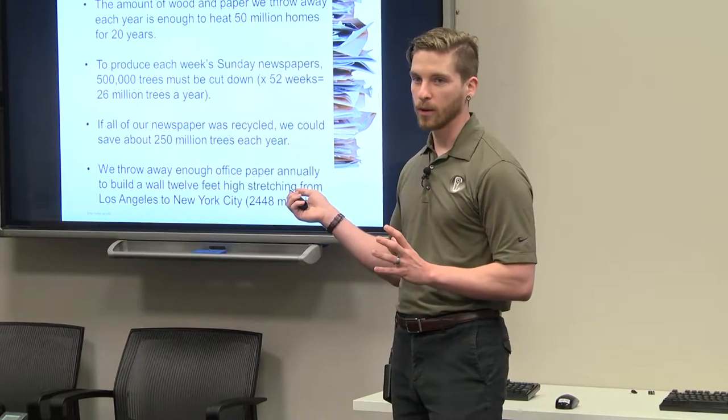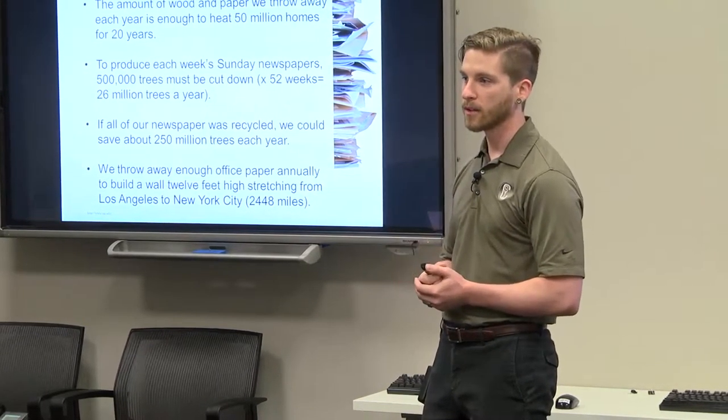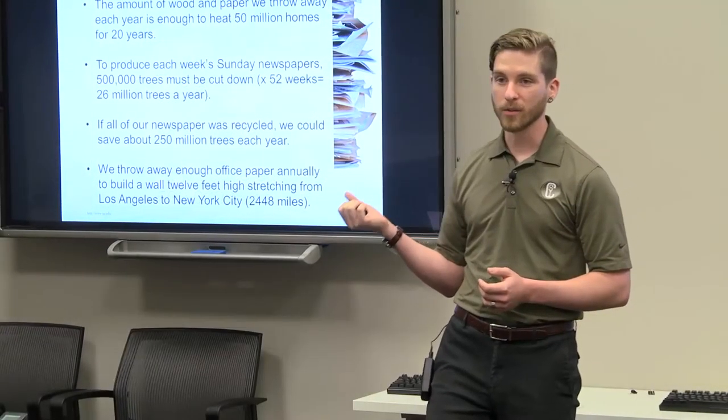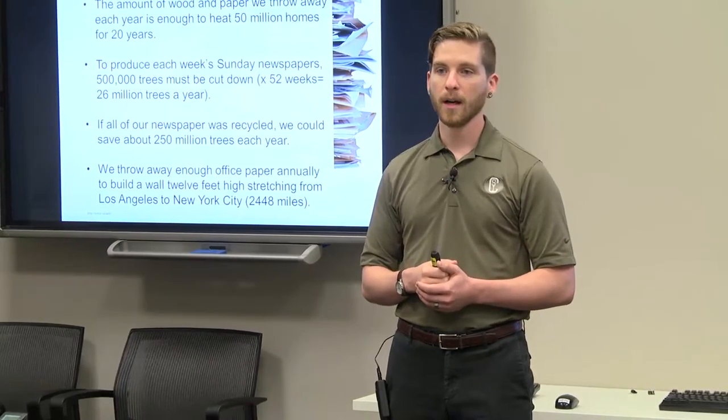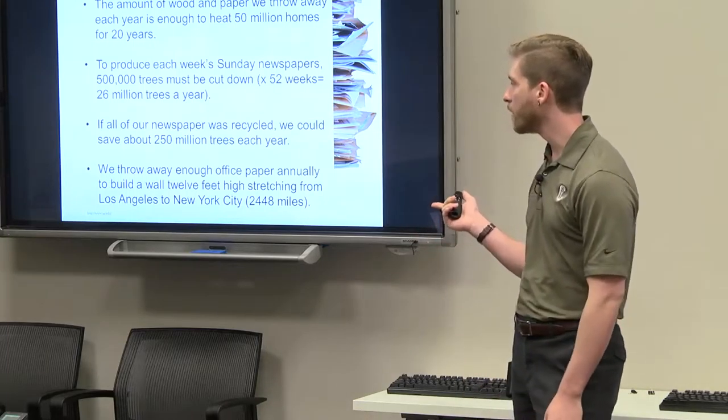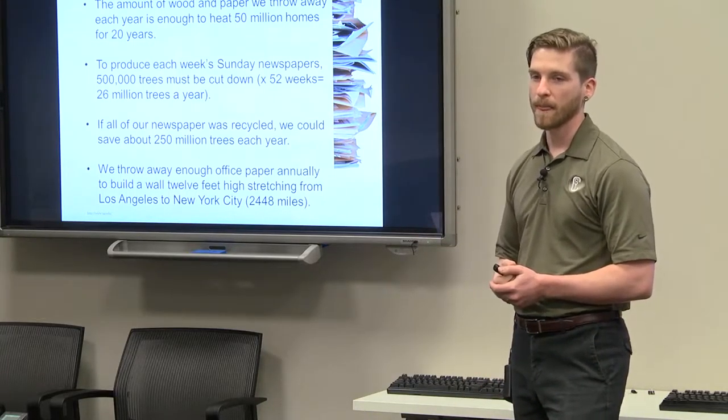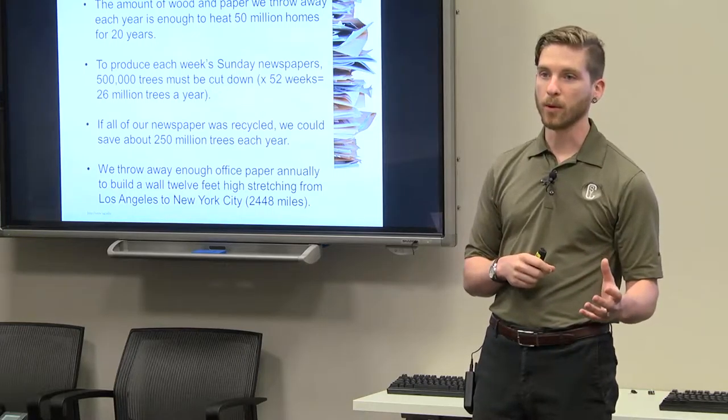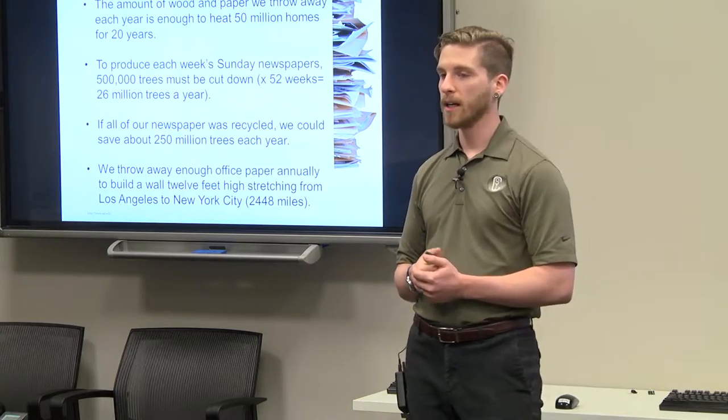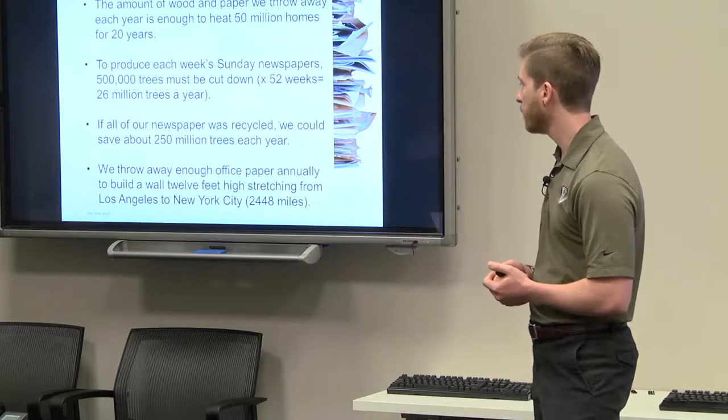Just to start off with some facts. This second one here is really cool. Just for the Sunday newspapers, every week 500,000 trees have to be cut down to produce that paper. If you take that times 52 weeks in a year, that's 26 million trees just for the Sunday paper. If you look at the full week of newspapers, that comes out to 250 million trees every year which are being cut down. So the more paper that gets recycled, the more of the recycled material is available to print on those, which has a better environmental impact.